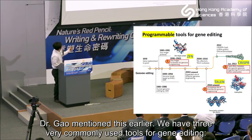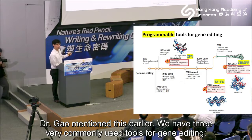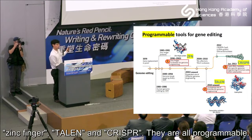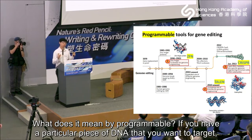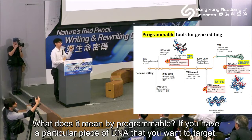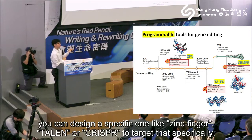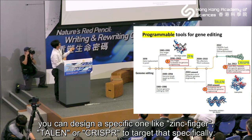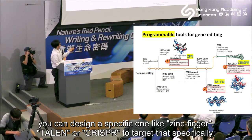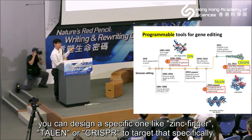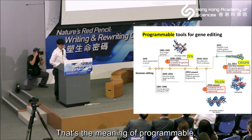We have three very commonly used tools for gene editing: Zinc Finger, TALEN, and CRISPR. They are all programmable. What do I mean by programmable? If you have a particular piece of DNA that you want to target, using these tools you can design specific ones - like Zinc Finger, TALEN, or CRISPR - to target that specifically. That's the meaning of programmable.